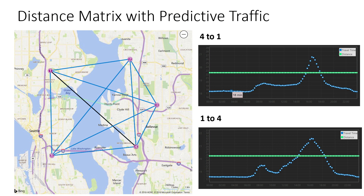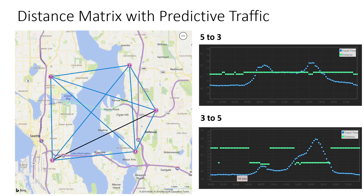Note that the travel distance between location one and location four does not change during the 24 hours. For traveling between location three and five, there are also two peaks around 8 AM and 5 PM respectively. However, the travel distance actually varies throughout the day, with the algorithm selecting different routes based on predicted traffic patterns. Especially from location three to location five, you can see that distance metrics with predictive traffic selects a longer but faster route for non-peak hours.